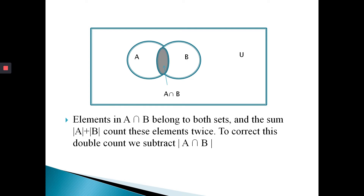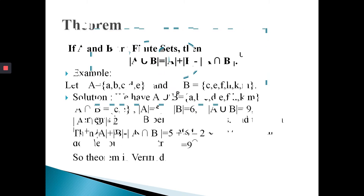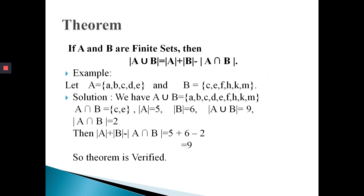This theorem is sometimes called the addition principle or inclusion-exclusion principle. The theorem states: if A and B are finite sets, then the cardinality of A union B equals the cardinality of A plus the cardinality of B minus the cardinality of A intersect B.